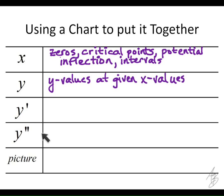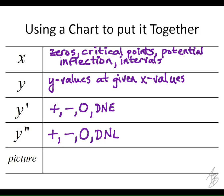For the first and second derivatives, we really only care about whether they are positive — a positive first derivative tells us the function is increasing — negative, which tells us the function is decreasing — zero, which might mean a horizontal tangent and a potential maximum or minimum — or where they don't exist, which could be a vertical tangent, a cusp, or a point of discontinuity. For the second derivative we want to know where it's positive for concave up, negative for concave down, zero where concavity might change, or where it does not exist.